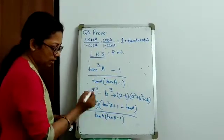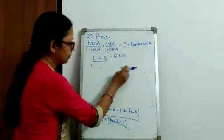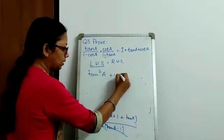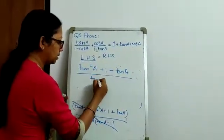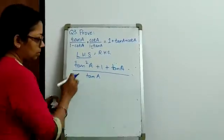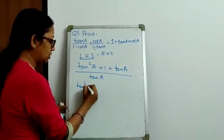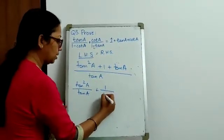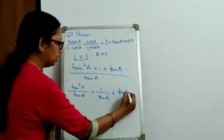So, as we can see this tan A and this tan A gets cancelled. So, we are left with in the numerator tan square A plus 1 plus tan A by tan A. Further, we split the terms. Let's split the terms, that is we will take our individual terms which is tan square A by tan A plus 1 by tan A plus tan A by tan A.